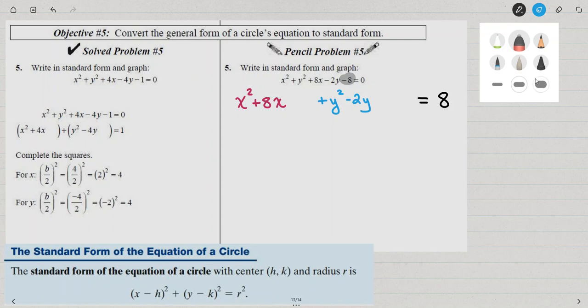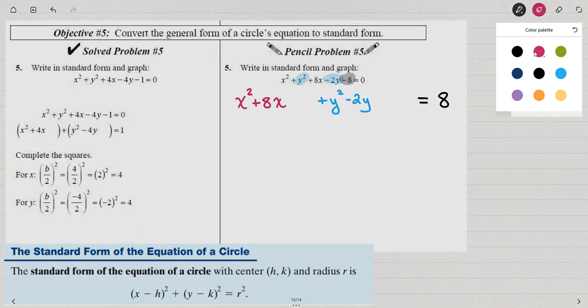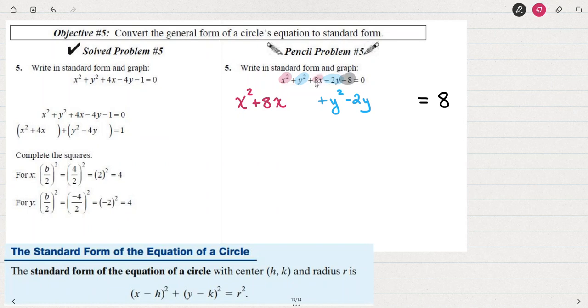I took the two X's and I put them together, the X squared and the 8X, and the two Y terms, the Y squared minus 2Y, and put them together. So I've grouped the like variables together.